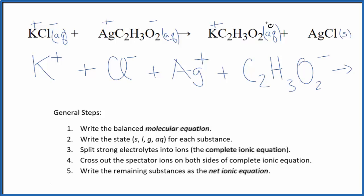Product side, we have this plus, minus here, so we'll have K+, just like we had in the reactants, plus the acetate ion again. And then for the AgCl, since it's a solid, we're not going to split it apart. We keep solids together in net ionic equations. So this is our complete ionic equation.